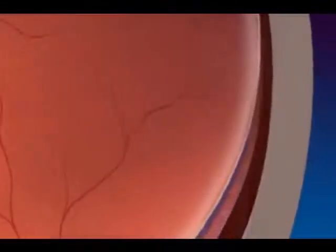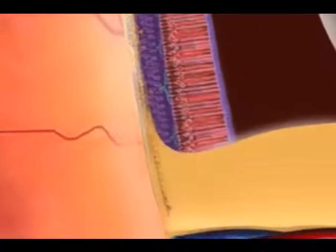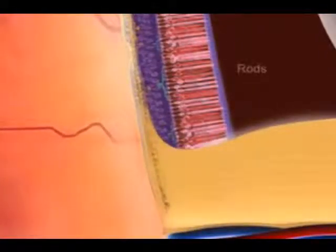The retina is the inner layer that contains the nerve cells, bipolar cells, as well as the rods and cones.